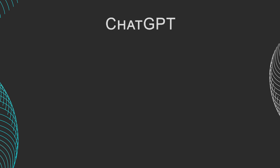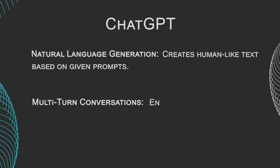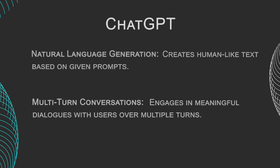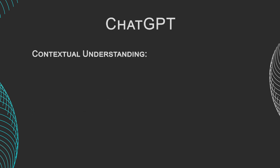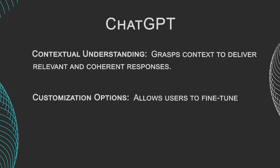ChatGPT features include: Natural Language Generation — creating human-like text based on given prompts; Multi-turn Conversations — engaging in meaningful dialogues with users over multiple turns; Contextual Understanding — grasping context to deliver relevant and coherent responses; and Customization Options — allowing users to fine-tune models for specific use cases.